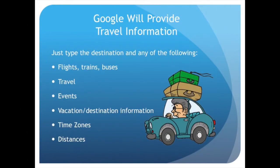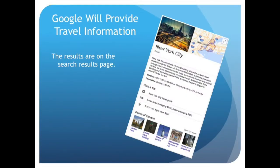Google will provide travel information. Just type the destination along with any of the following: flights, trains, buses, travel, events, vacation destination, time zones, or distances. Google will provide the travel information directly on the search results page.